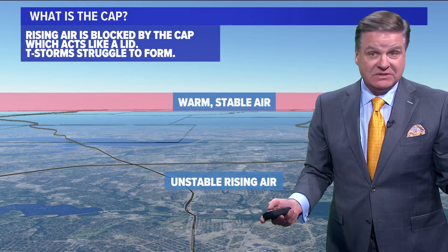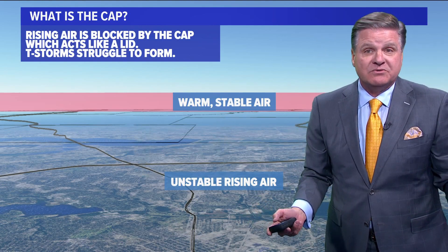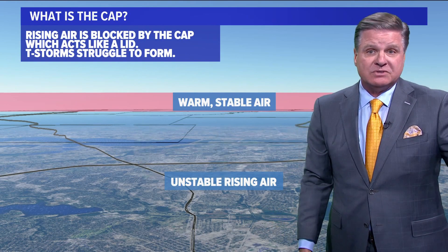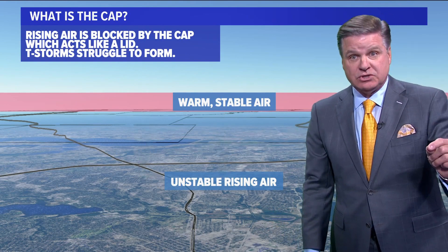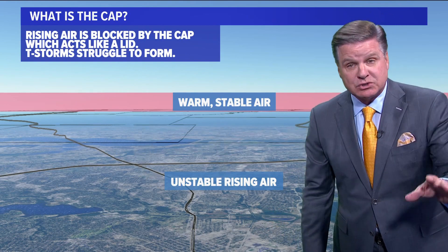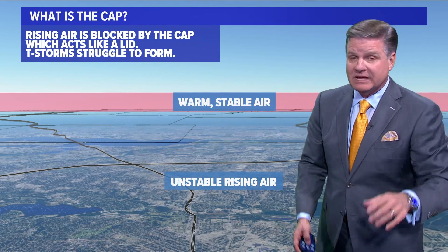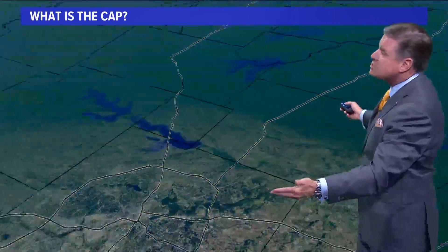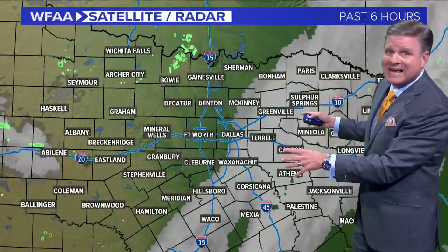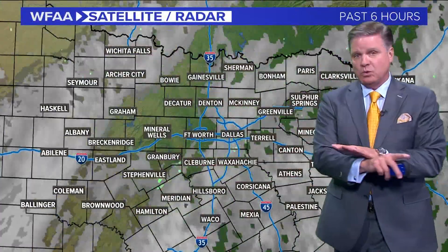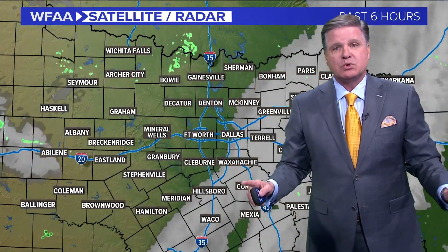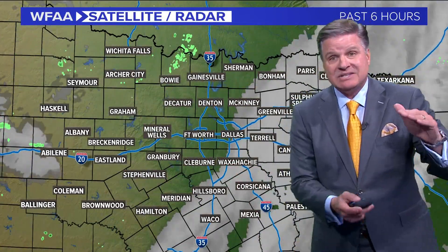They might get to 10, 15, 20,000 feet, but they won't get up to 30, 40,000 feet. And those are the elevations that you need in order to have the tornadoes like you saw in that video in Arkansas. That's what the cap is. And when that's in place across North Texas, it will just completely shut down thunderstorm development.